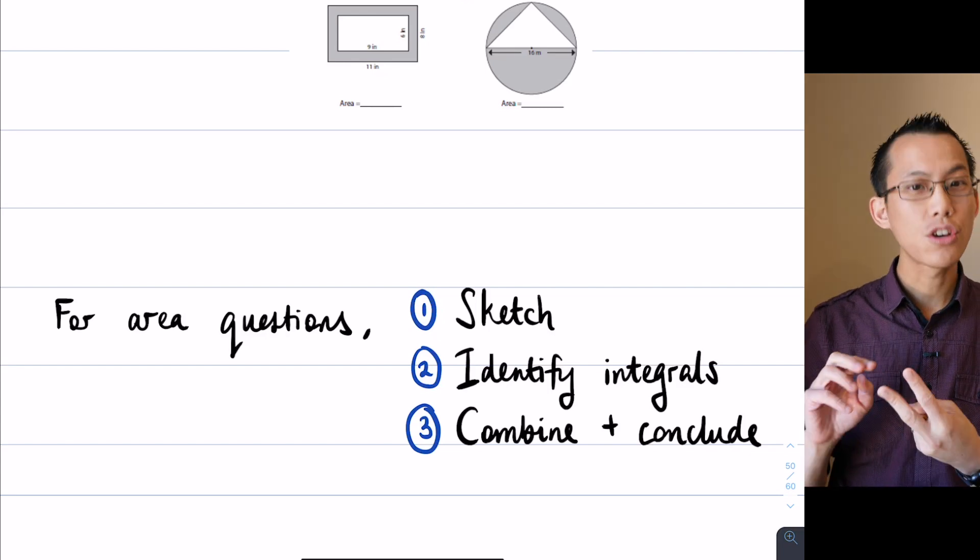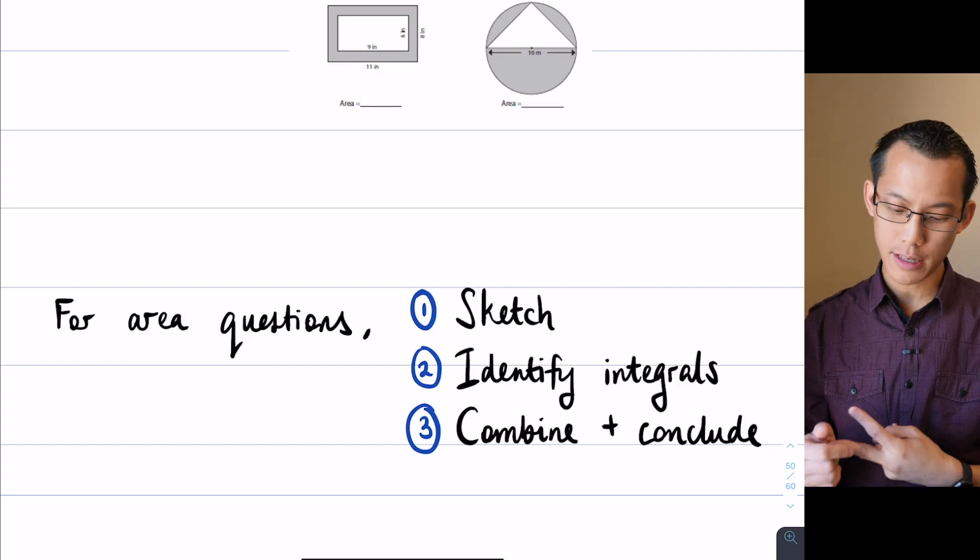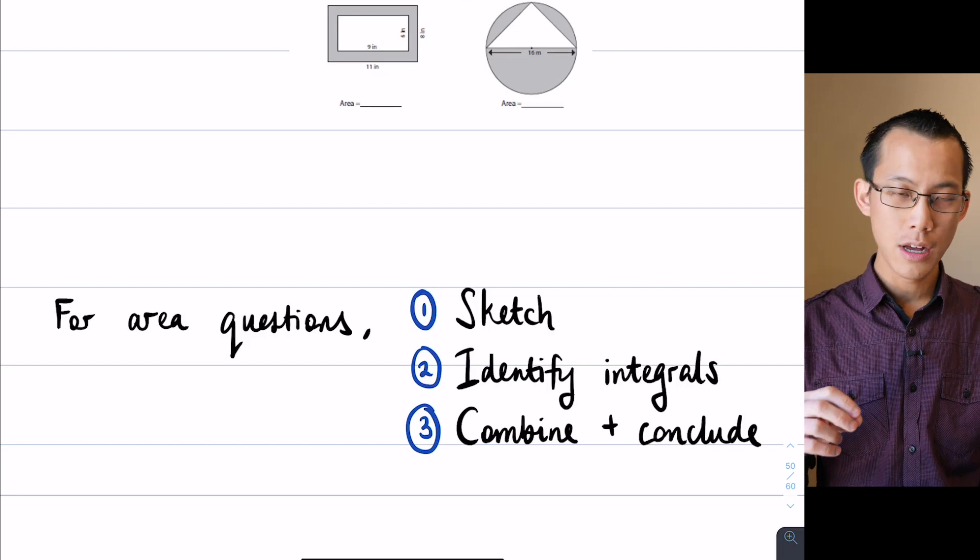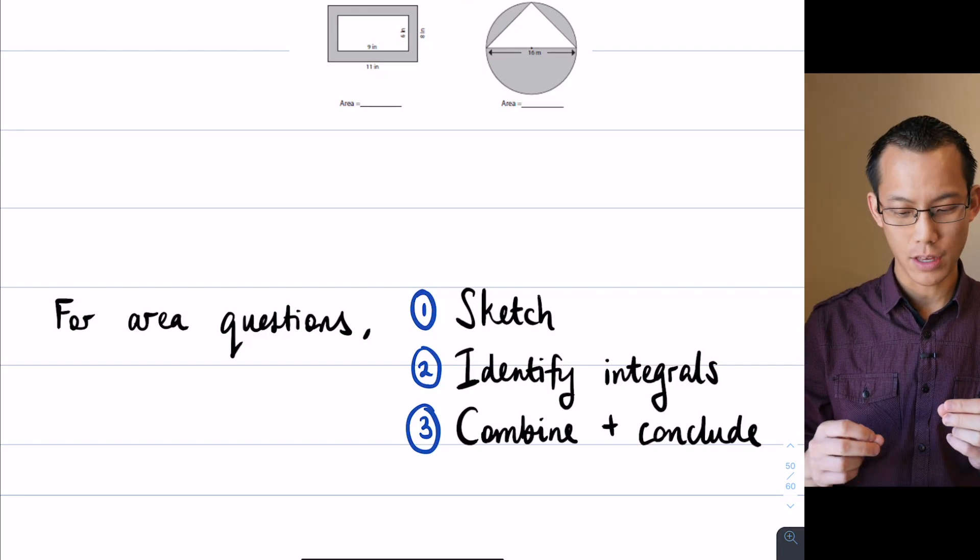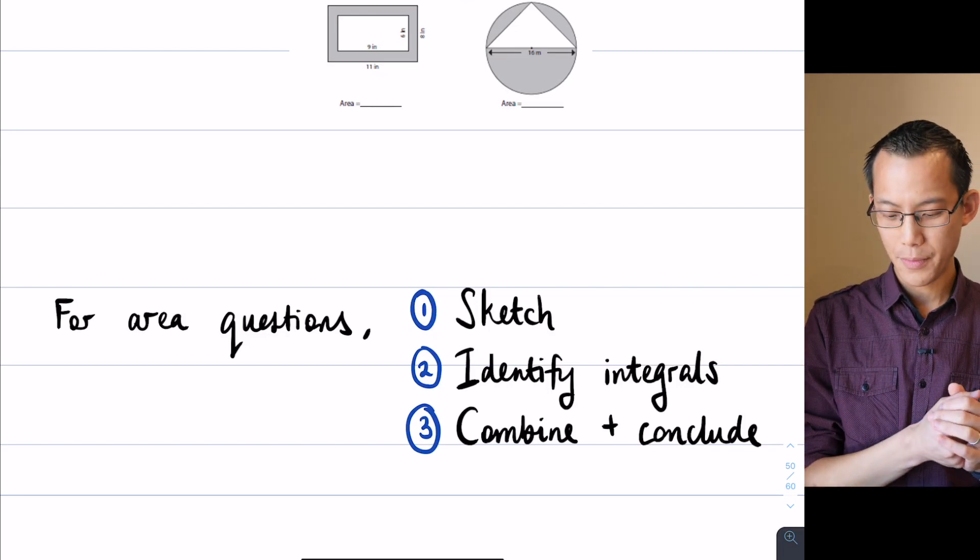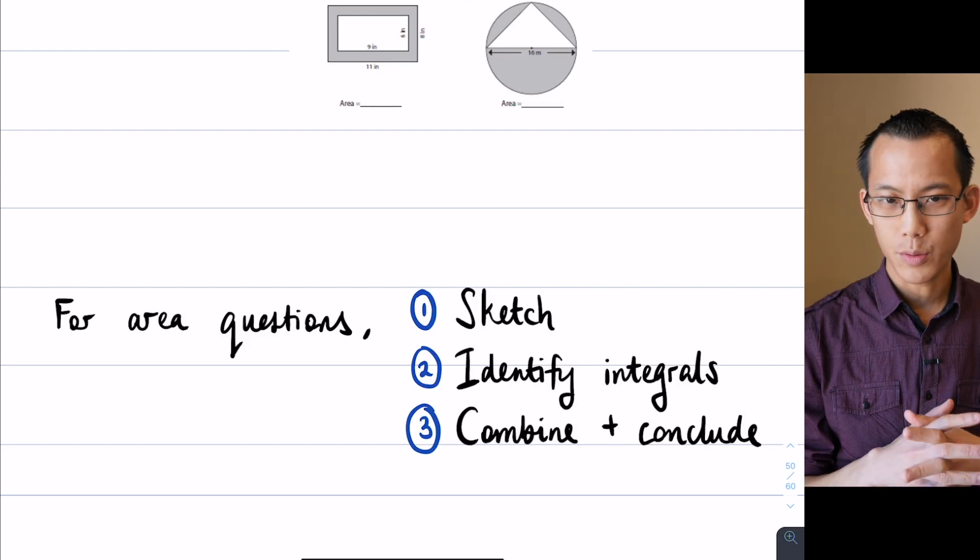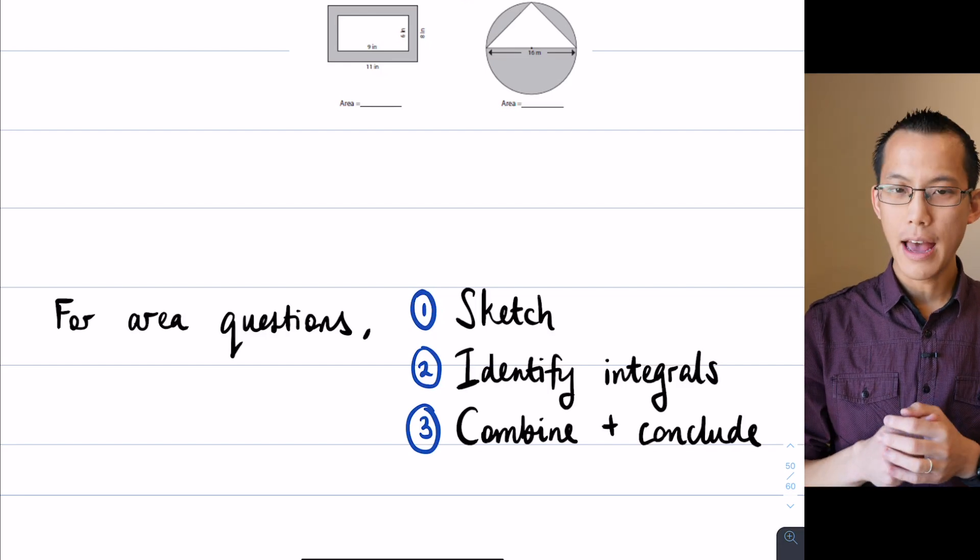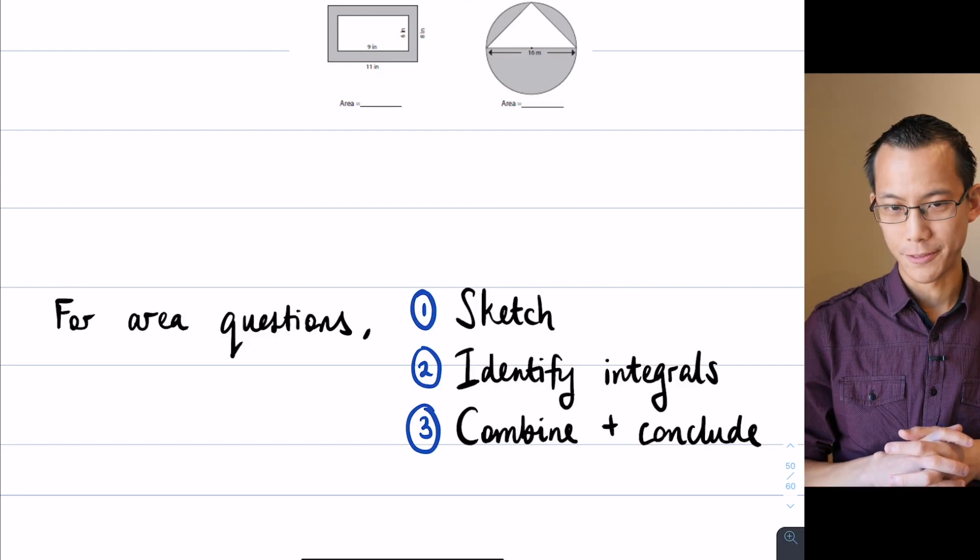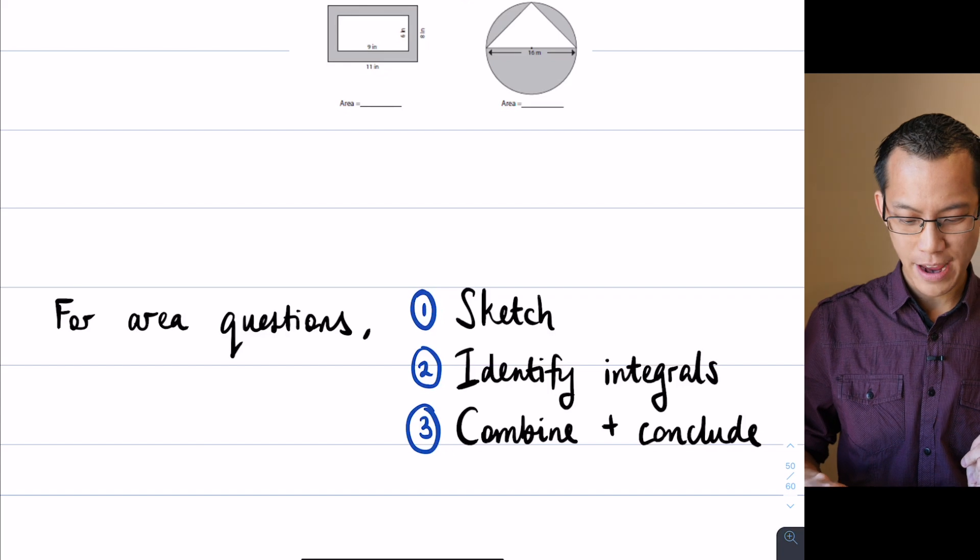So we're going to sketch with these compound regions. You're going to see that step two there, identifying the integral. There's a little more work to there because of the complexity of the kinds of shapes we're looking at. And then the last thing is very, very similar. We're going to combine whatever areas we've got. Perhaps we need to subtract some. We need to add some. And then we come up with a conclusion.